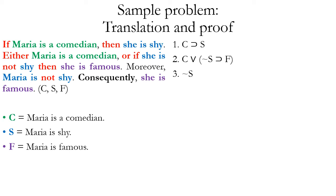The conclusion is F, a simple proposition placed after the slash. The translation is now complete. The main conclusion F appears in the second premise as the consequent of the conditional that is the second disjunct. We need to strategize how to isolate F from that longer expression using implication rules.